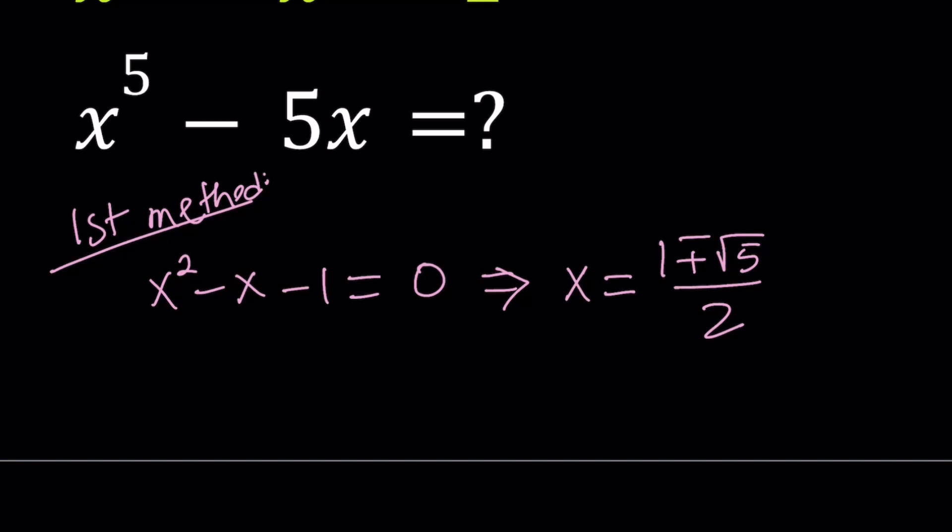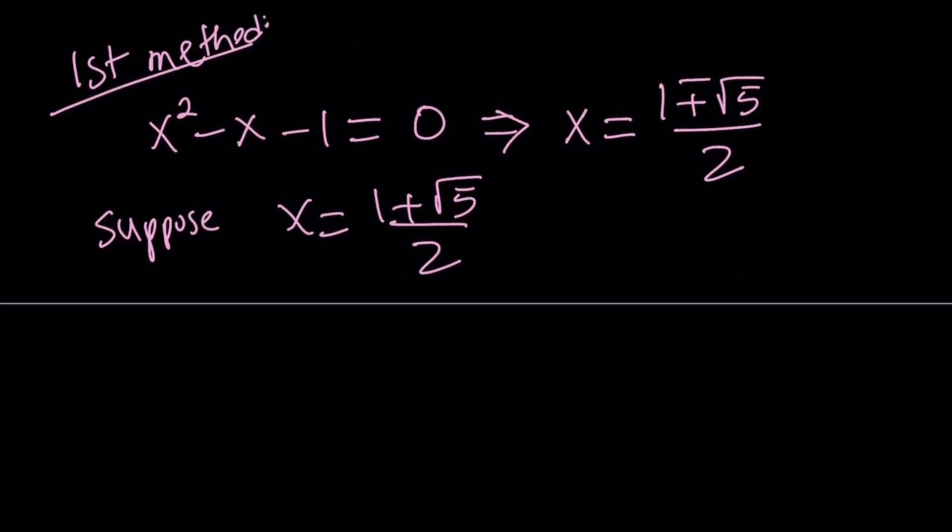Now suppose it's one of them. Now does it matter? It doesn't. You're going to realize at the end that whichever x value you choose, it doesn't matter, but you can always test it out. So suppose x equals 1 plus square root of 5 over 2. Now I'm going to go ahead and evaluate this.